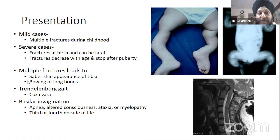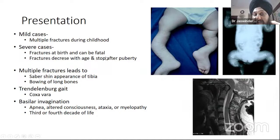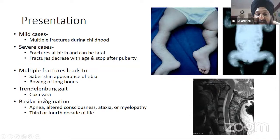In mild cases, the child presents with multiple fractures during childhood; in severe cases there are fractures at birth, which can be fatal — this occurs in type 2 disease. Fractures decrease with age and tend to stop after puberty. Multiple fractures lead to bowing of long bones. With associated coxa vara the child may have a Trendelenburg gait, and with basilar invagination there will be signs of myelopathy.